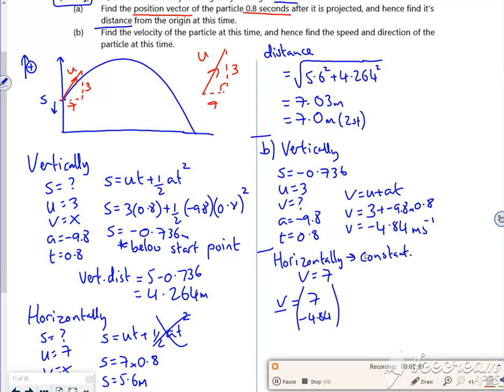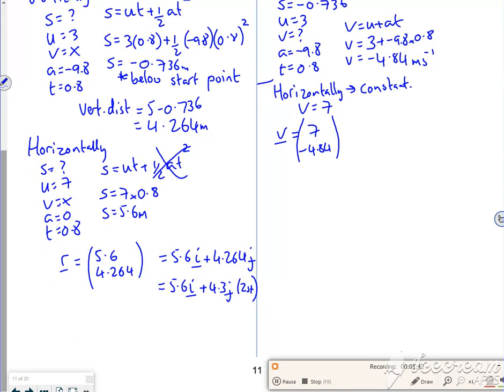Now see once it's speed and direction, so speed and direction is just Pythagoras on time, isn't it? So it's going 7 across and minus 4.84. So for its speed, it's the square root of 7 squared plus 4.84 squared. That says to 2 sig fig is 8.5 metres per second.